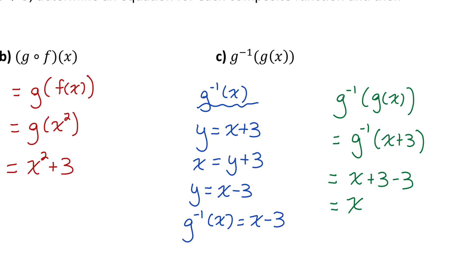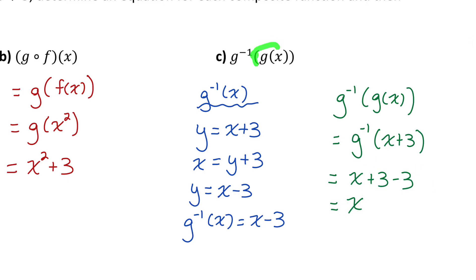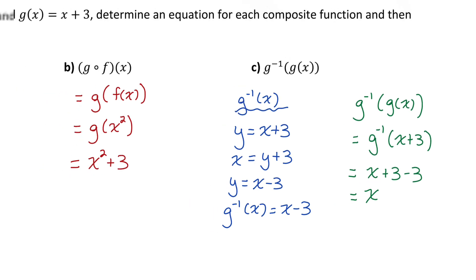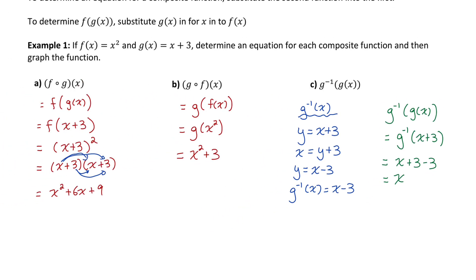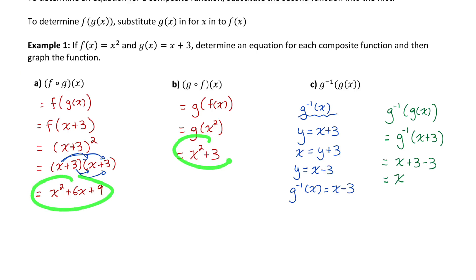That simplifies to just x. And remember, inverse functions do the opposite operations as the original function. So it should make sense why those operations cancelled out and we're left with just x when we substitute a function into its own inverse. This question also asks us to graph each composite function, so I need to take these three functions we just determined and graph them all.